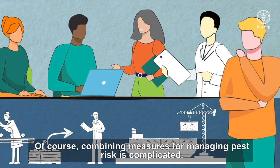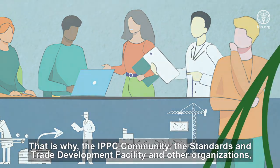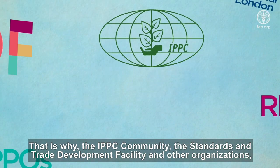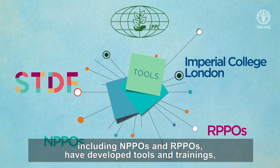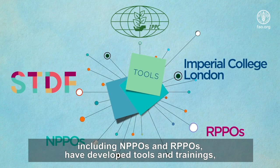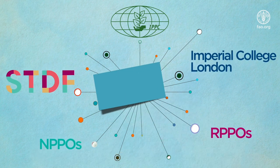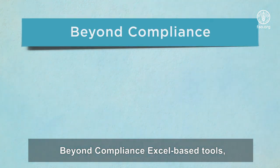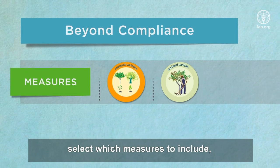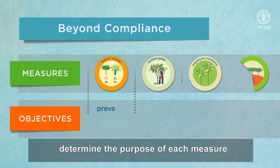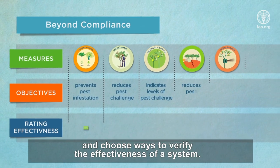Of course, combining measures for managing pest risk is complicated. That is why the IPPC community, the Standards and Trade Development Facility and other organisations, including NPPOs and RPPOs, have developed tools and trainings supporting the use of systems approach. Beyond Compliance Excel-based tools guide NPPOs around the world, enabling them to select which measures to include, determine the purpose of each measure and choose ways to verify the effectiveness of a system.